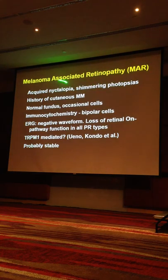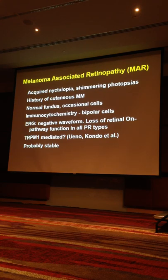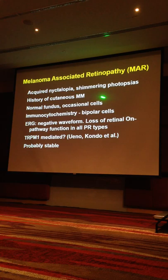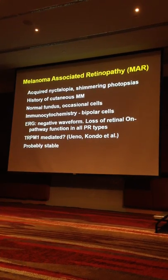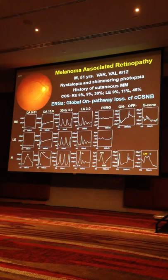Now this is a patient who has melanoma-associated retinopathy — one of the paraneoplastic syndromes. Both melanoma and carcinoma-associated retinopathy exist. MAR tends to present with acquired night blindness and shimmering photopsias; they have a history of cutaneous malignant melanoma. Occasionally you'll see cells in the vitreous. We know it's a bipolar cell disease on immunocytochemistry, and the ERG is characteristic of loss of all on-pathway function due to loss of synaptic transmission. Some of this is mediated through TRPM1, which is the cause of recessive congenital stationary night blindness.